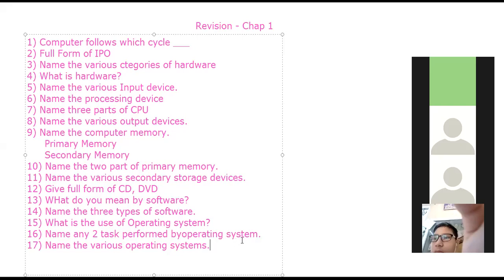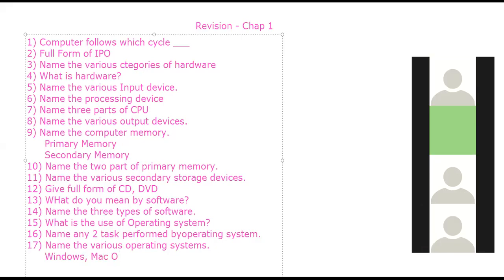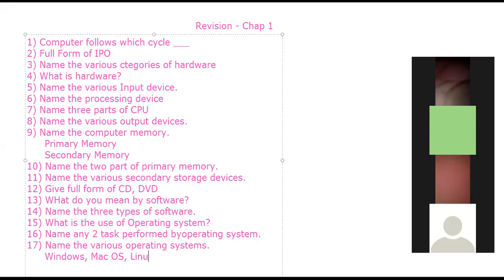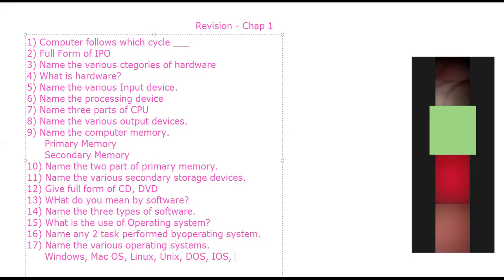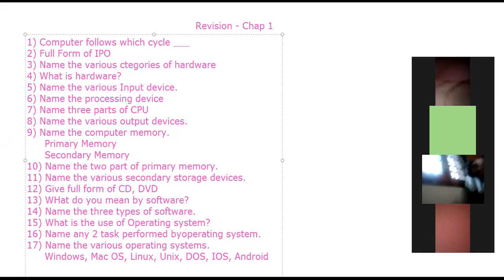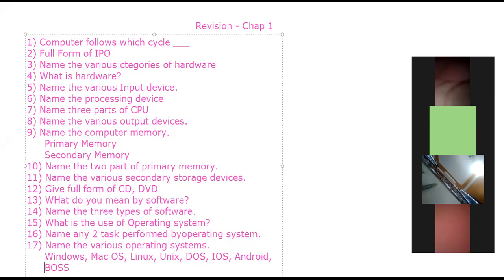One is Microsoft Windows. Then we have Mac OS — that is Macintosh, for Apple. Then there is Linux, Unix, and DOS — an old operating system no longer used nowadays. Then iOS for Apple mobiles and iPads. Then Android, used mostly in mobiles and tablets. Then there is BOSS also. These are the various operating systems available.